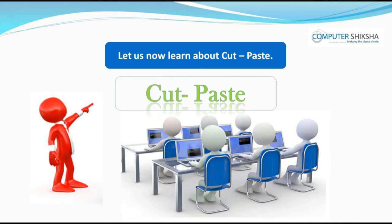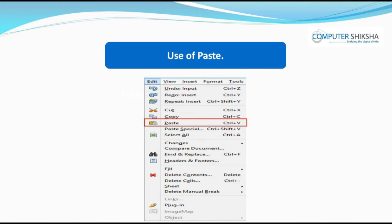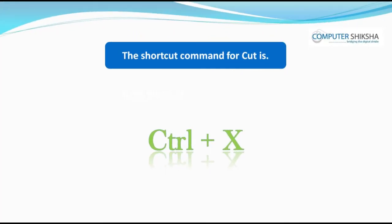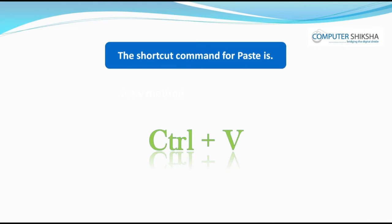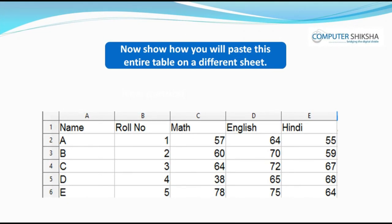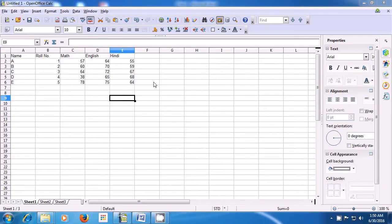Let us now learn about cut and paste. With the help of cut, you can remove text, a picture, or an object from a place where you don't want it, and then insert it elsewhere using paste. The shortcut command for cut is Control+X and for paste it is Control+V. Now show how you will paste this entire table on a different sheet.